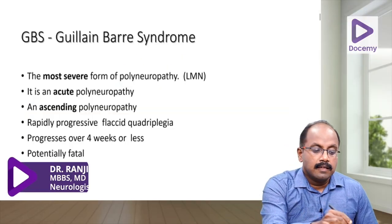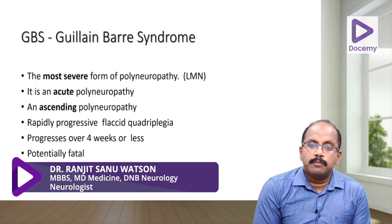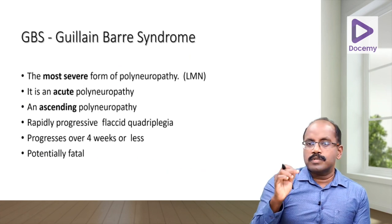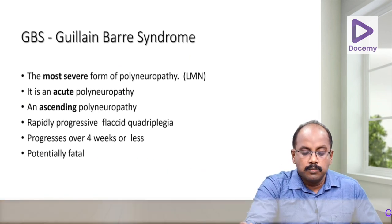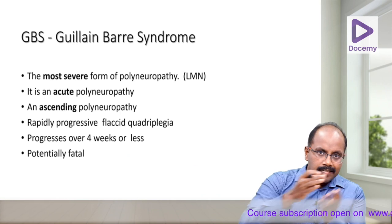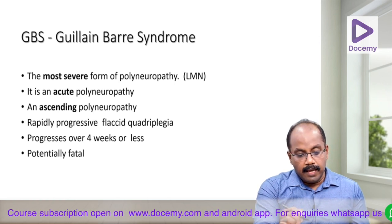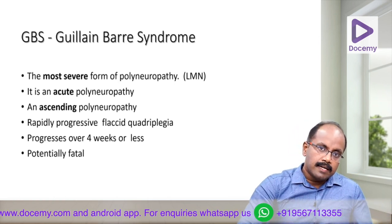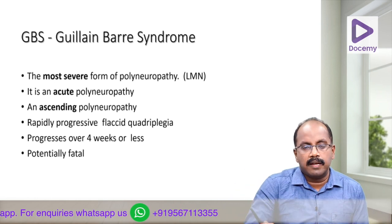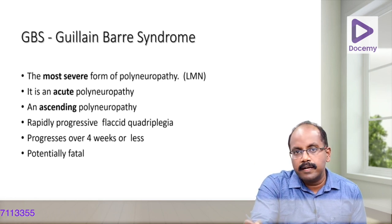We are going to discuss a very dangerous disease in neurology called GBS — Guillain-Barré Syndrome. It is the most severe form of polyneuropathy a person can develop. It is an acute form of polyneuropathy and it is an ascending type, meaning it starts in the legs and ascends to the trunk and then to the upper limbs.